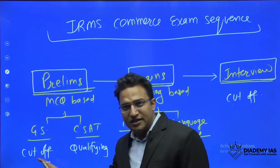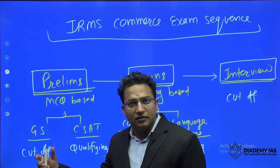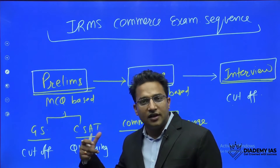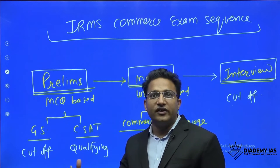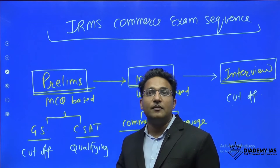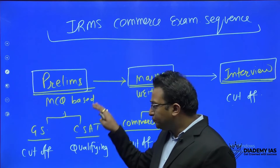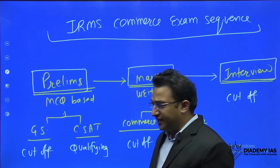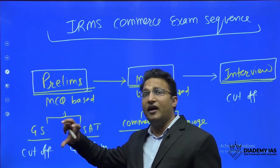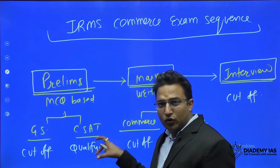There will be total two papers: one paper is General Studies and the second paper is Civil Services Aptitude Test. In General Studies, the paper includes subjects like history, geography, economy, environment and agriculture, science and technology, and current affairs. In the Civil Services Aptitude Test you will have mental ability, reading comprehension, decision making, and data interpretation. The GS paper is merit-based with a cutoff.